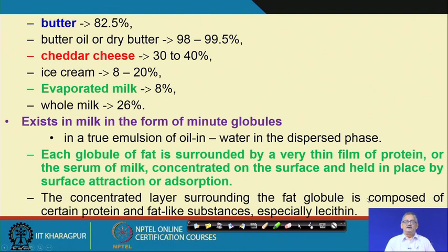Similarly, butter contains around 82.5 percent fat, and butter oil contains not less than 98 to 99.5 percent fat. Cheddar cheese contains around 30 to 40 percent fat, ice cream around 8 to 20 percent, evaporated milk not less than 8 percent, and whole milk contains about 3.3 percent fat.